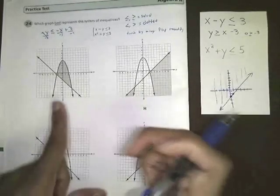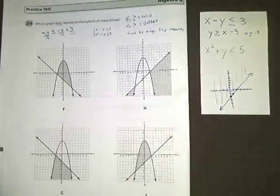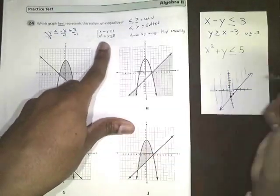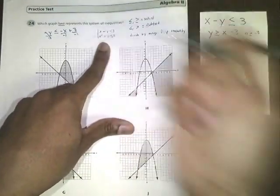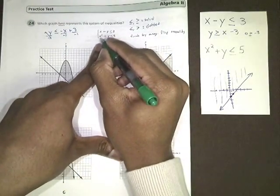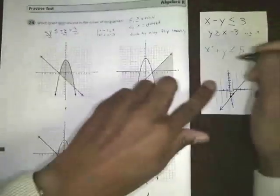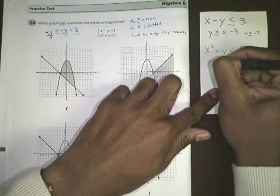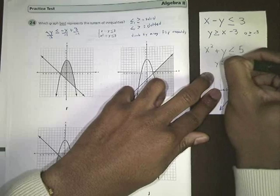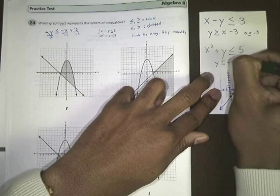Now we need to do the same thing, but graph our next inequality. We have to get it so that we have the y on one side by itself. So we're going to have to subtract this x squared. We're going to end up with y is less than or equal to negative x squared plus 5.